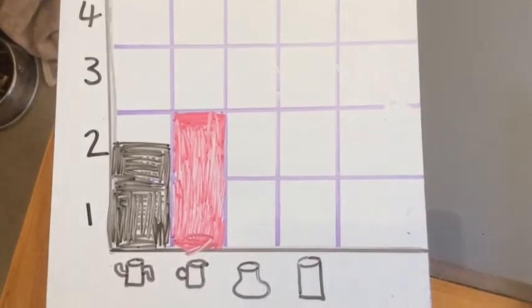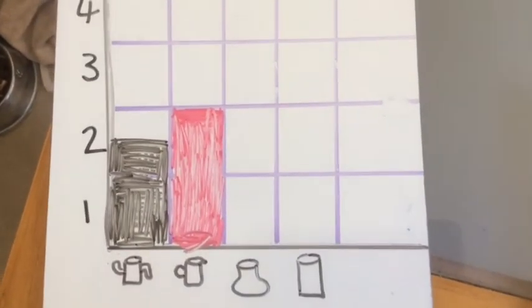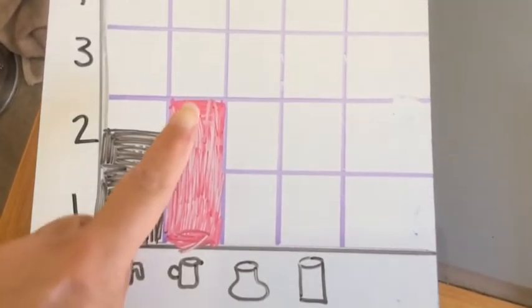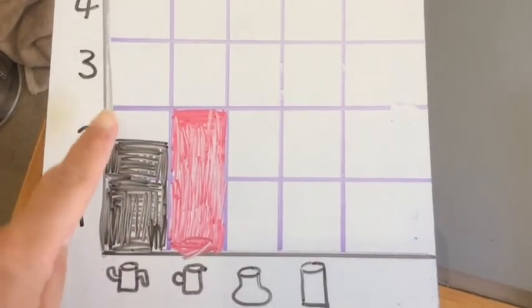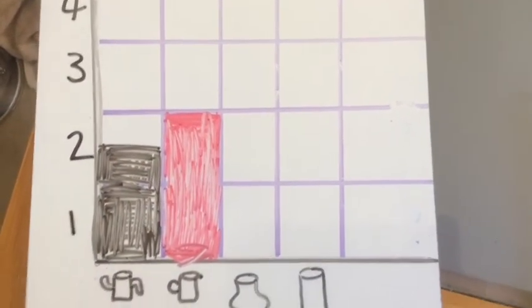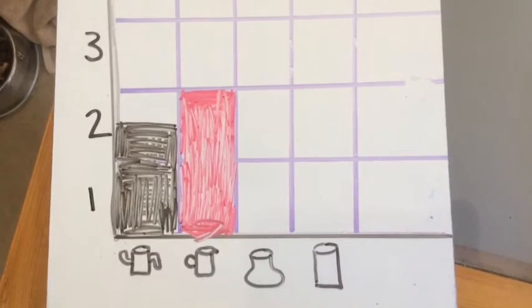How about my jug then? How much did that hold? It came to the top of bar number two, so it held two yoghurt pot fulls of water.